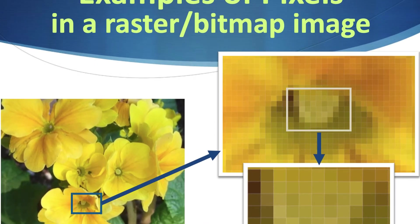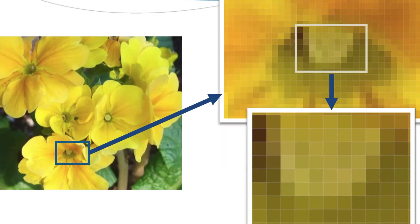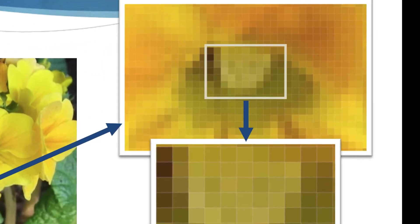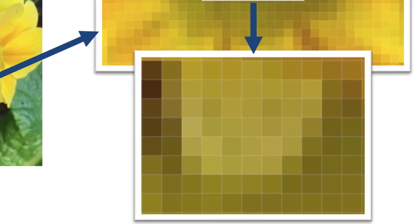Here are examples of pixels in raster or bitmap images. If you hear the term 'raster,' it basically means it's going to convert those pixels into dots when printed, and it's not using vector artwork. Here's an image of flowers — when you zoom in you can see the pixels, almost like pointillism in painting, and the more you zoom in, you see less detail and more pixels.